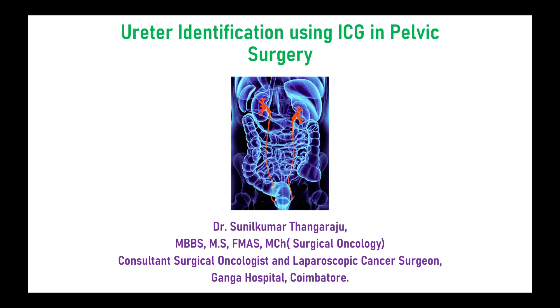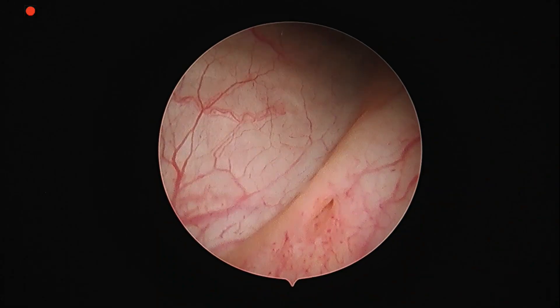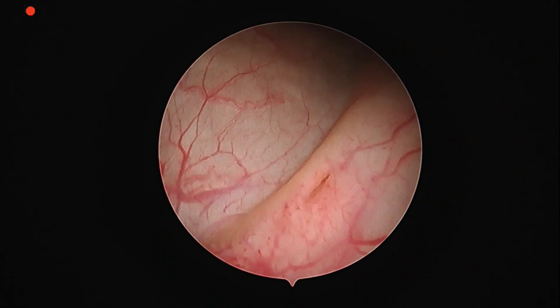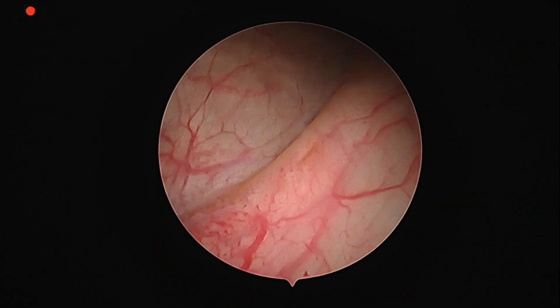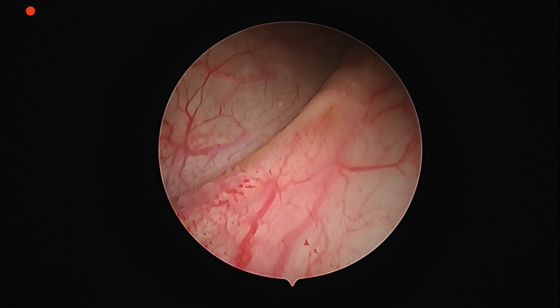This is a 37-year-old female patient presenting to us with a left ovarian endometriotic cyst along with a dermoid cyst which is under it, and with deep pelvic endometriosis.